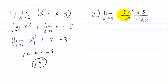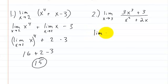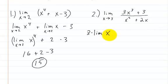On to problem 2. We're going to apply the limit to all variable terms. First, we take out the coefficient 3, so we have 3 times the limit of x cubed as x approaches 3. We'll also take out that cube exponent in a moment.